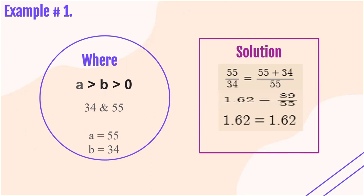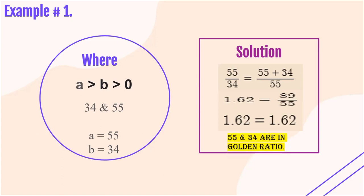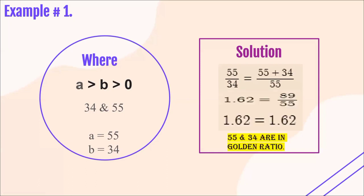So, can we say that our given numbers are in Golden Ratio or not? Yes — 55 and 34 are in Golden Ratio because both sides are equal to each other. So let's try another example. Let's proceed to example number 2.